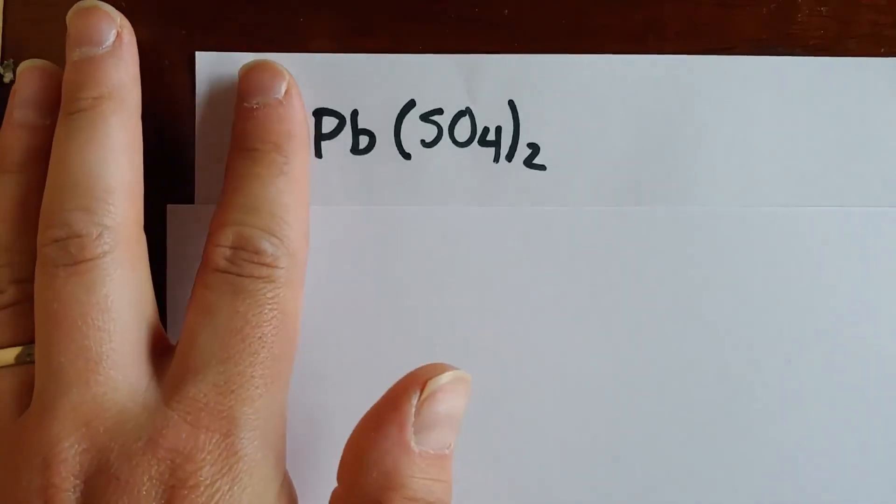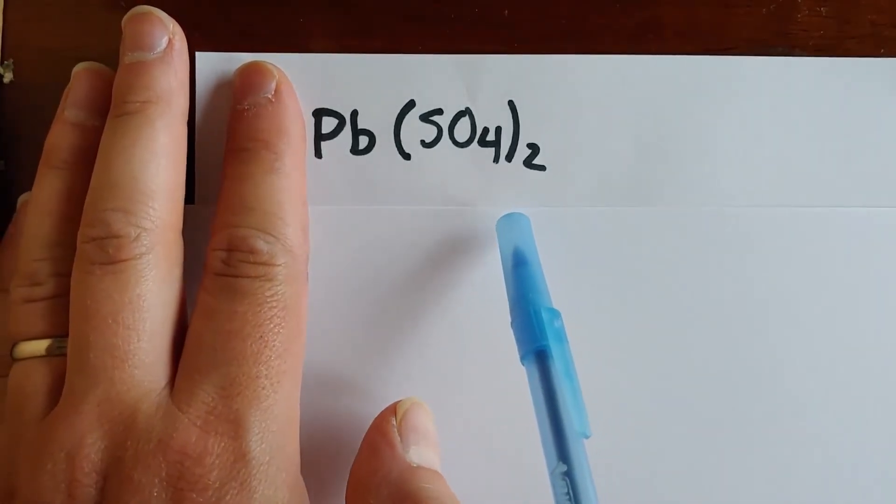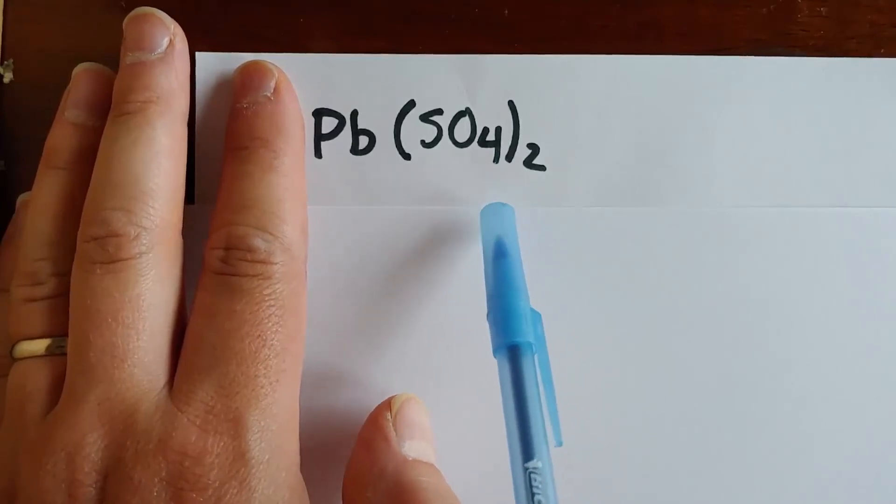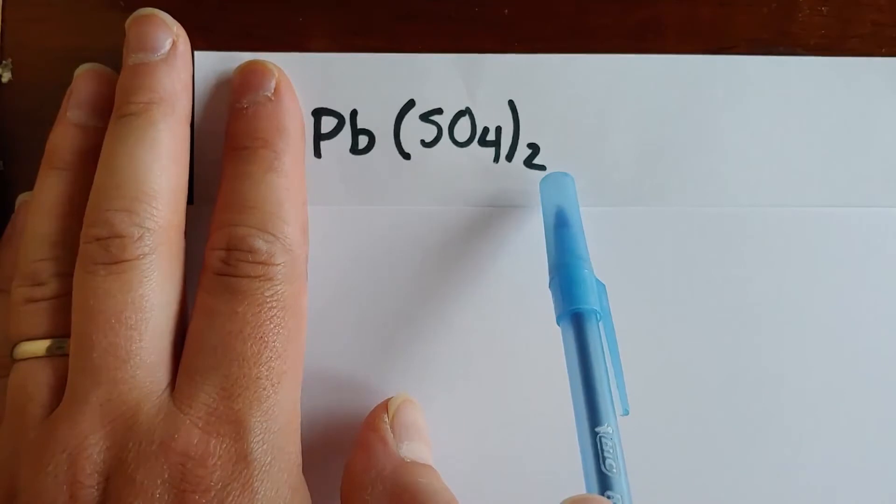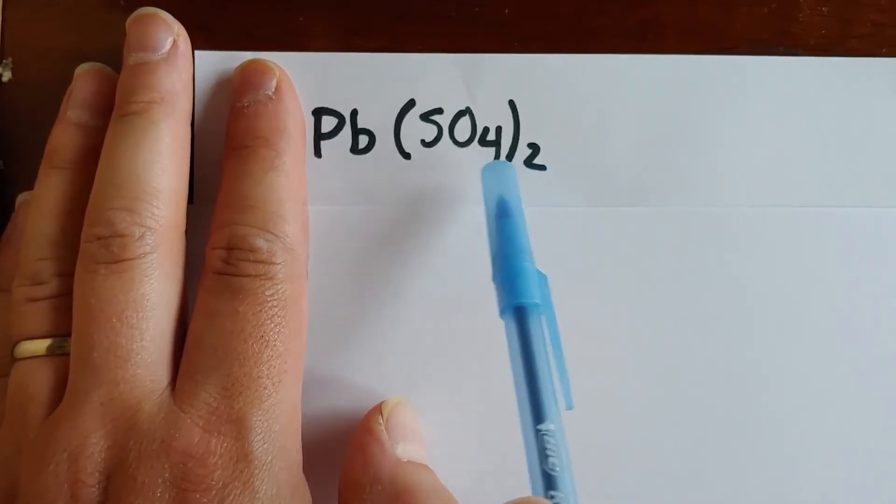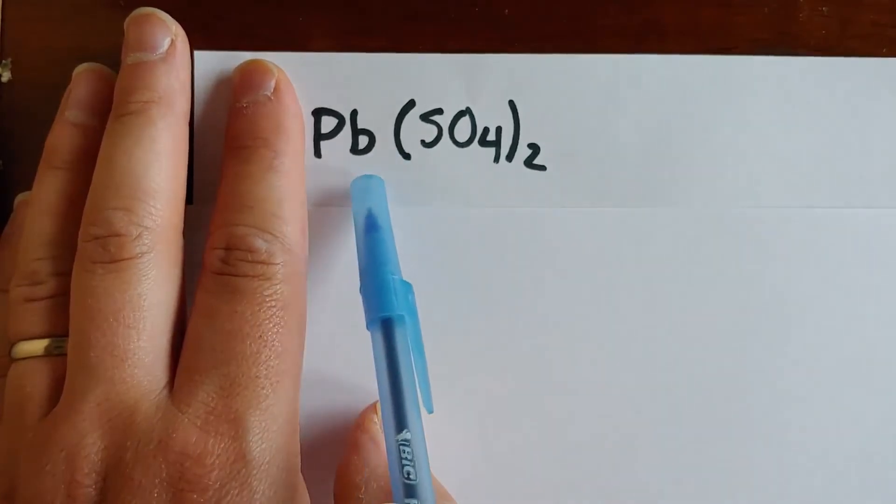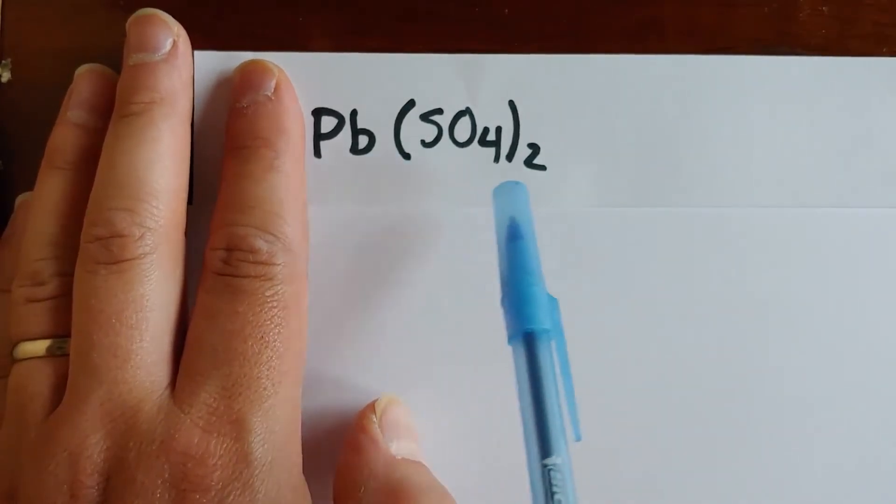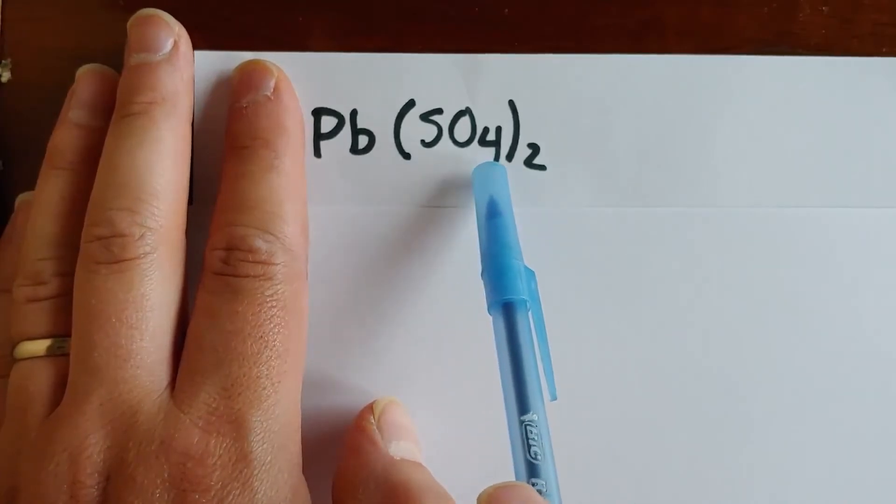This is about as complicated as they can get. Once again, my advice is to cover the coefficient and then draw the molecule we have here. Now, as we learned earlier in this class, when you have parentheses and a subscript after that, this subscript in this case is two says you have two groups, whatever's in the inside. In this case, we have one lead atom bonded to two groups with each group having a sulfur and four oxygens.